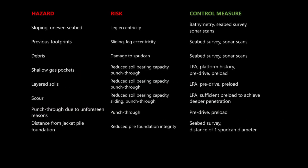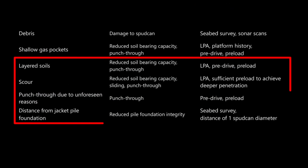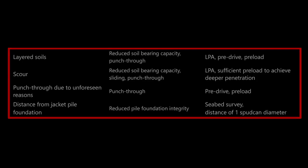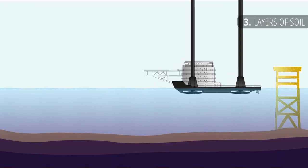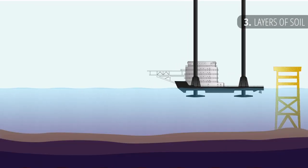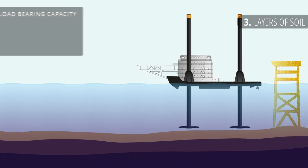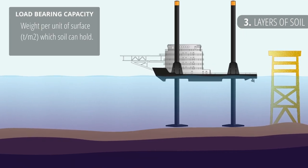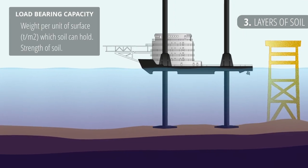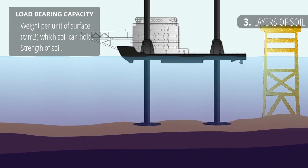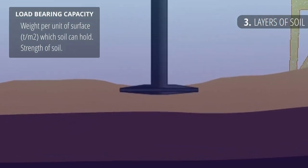Let's move on to hazards related to soil quality and load bearing capacity. Often times the seabed will be layered, and the type of soil will change as the depth increases. Each type of soil has a different load bearing capacity, that is the weight per unit of surface that it can hold. There are no exact numbers that we could apply to every location, but based on the seabed type we know what to expect.